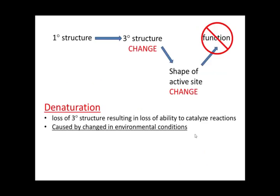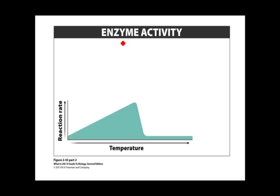Let's look at the effect of temperature and pH changes on enzyme activity. This graph shows reaction rate on the y-axis — the speed at which an enzyme catalyzes its reaction — going from low to high, and temperature on the x-axis going from low to high. Temperature is the independent variable and reaction rate is the dependent variable, since it depends upon the temperature.